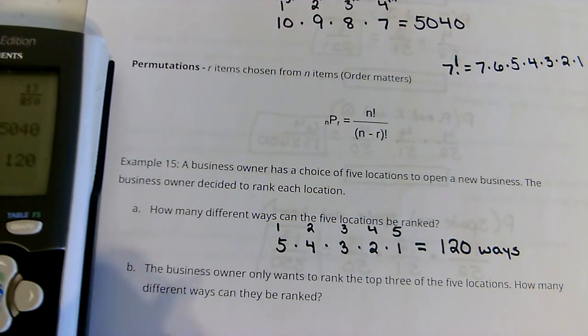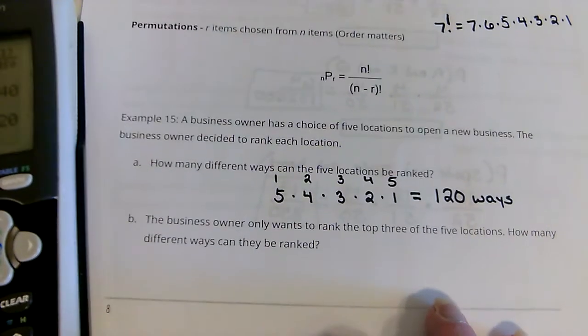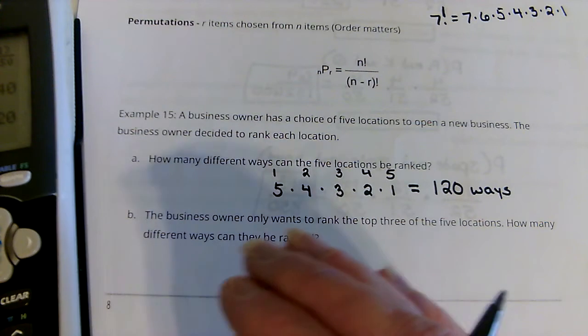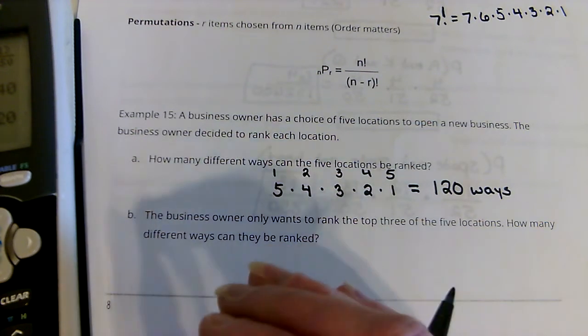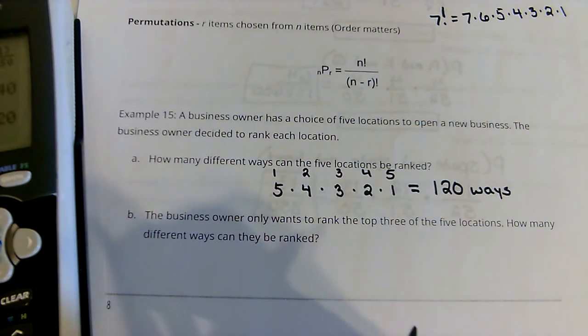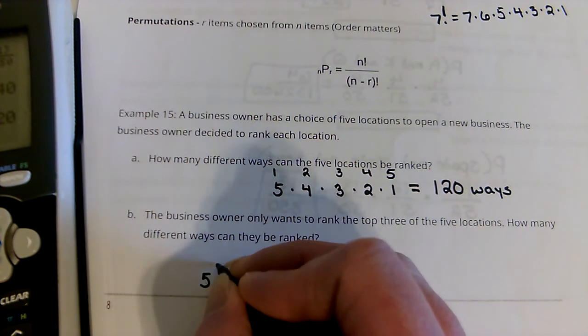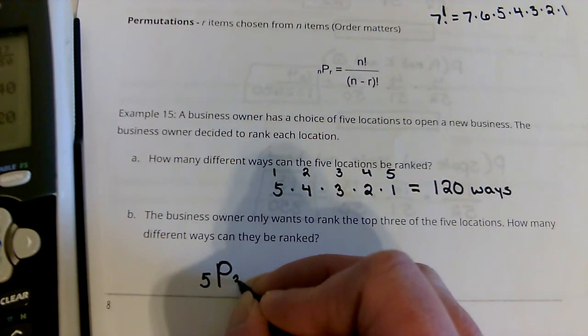Now, what if the business owner only wants to rank the top 3 of those 5? How many different ways can be ranked? So, let's look at this formula and we're going to do this one with the formula and then I'm also going to show you how you can do it with the calculator. So this is 5 locations and we're going to pick 3.